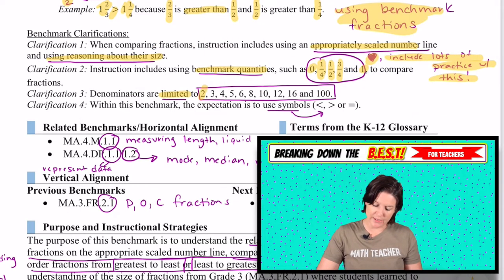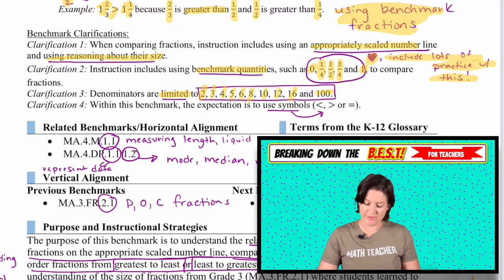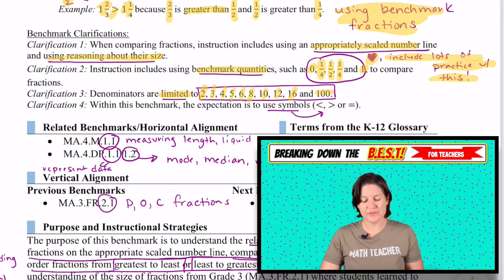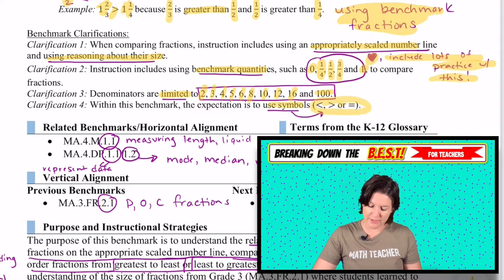Denominators are limited to halves, thirds, fourths, fifths, sixths, eighths, tenths, twelfths, sixteenths, and hundredths. And you might be asking why hundredths? Well, that's because there's a lot of use between the tenths and the hundredths in our fourth grade standards. And we also will be using these symbols right there.